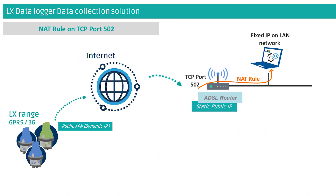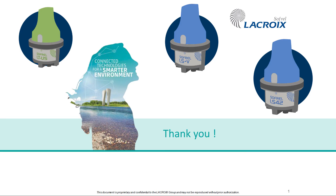Finally, if you have a PCWin2 with a PCCOM 4 and want to send configurations to the data logger, it is necessary to choose SCADA and Configuration, then fill in the fixed public IP address of the router. To make communication possible, you must create a NAT rule in the router to redirect port 502 to the IP address of the PCCOM or PC server. Thank you for listening and see you next time.